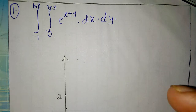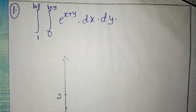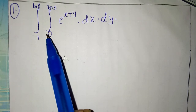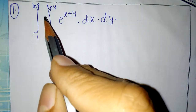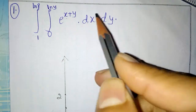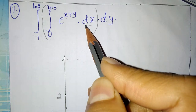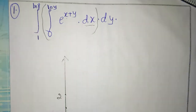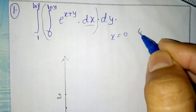I am going to tell how to sketch a region for a given double integral. It is a very easy trick to find a region for a given integral. Here they give 0 to ln(y), e raised to x plus y, with respect to dx. So the first integration is with respect to x, meaning these are x limits: x is equal to 0 and x is equal to ln(y).